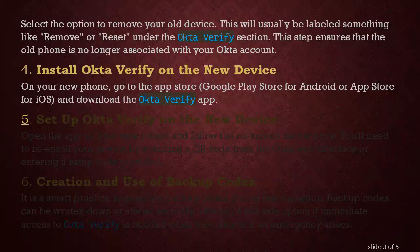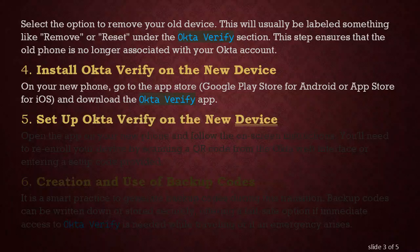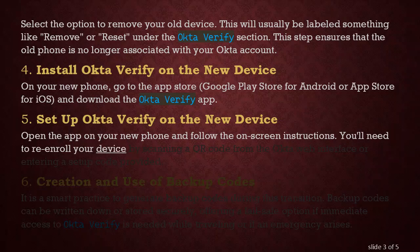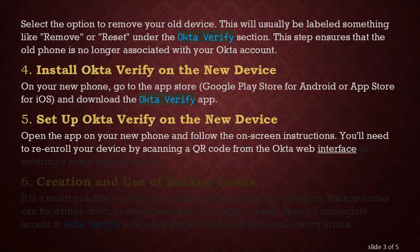Step 5: Set up Okta Verify on the new device. Open the app on your new phone and follow the on-screen instructions. You'll need to re-enroll your device by scanning a QR code from the Okta web interface or entering a setup code provided.